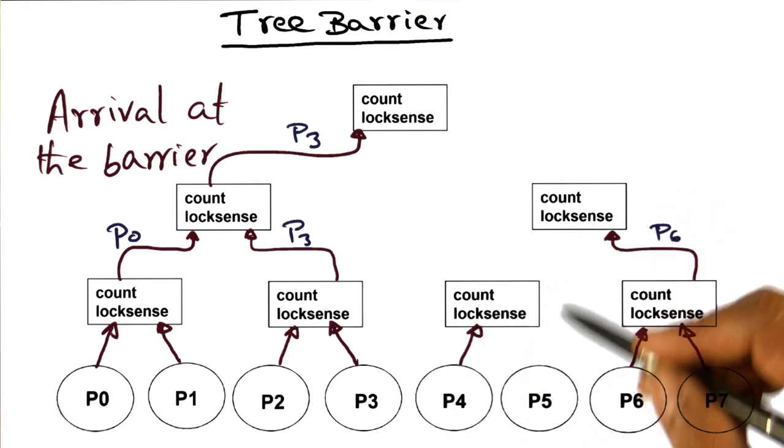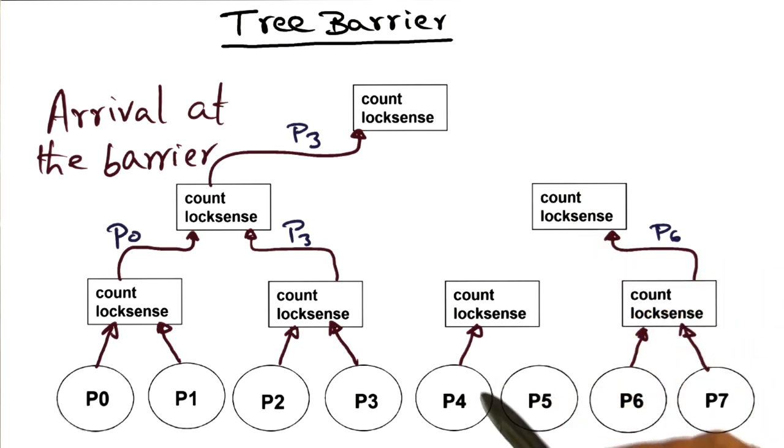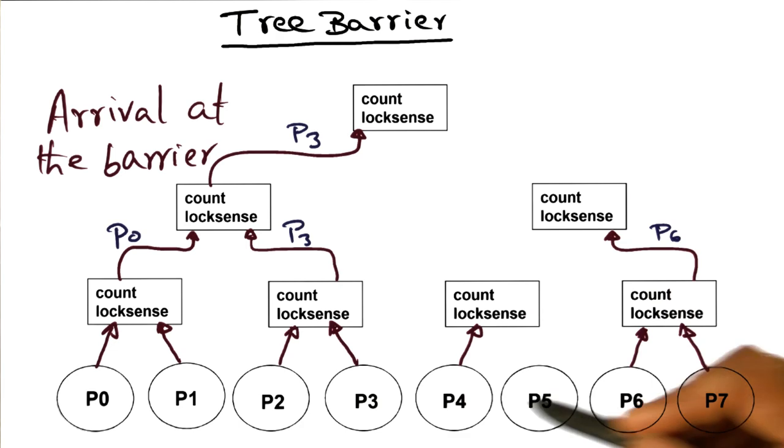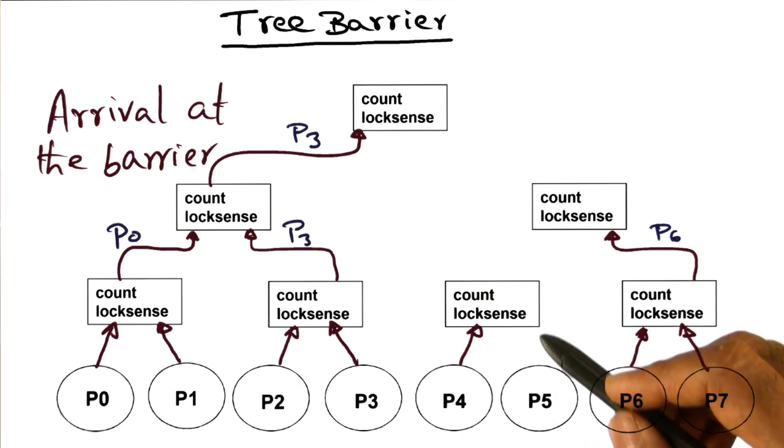And you can guess which one is going to come up, right? Because P4 has already arrived here. And so if P4 has already arrived here, he's decremented the count, and he's waiting on lock sense to flip. So the straggler in this whole scheme of things is this guy right here. He's the guy who is, he's still not arrived, but eventually he'll also arrive.